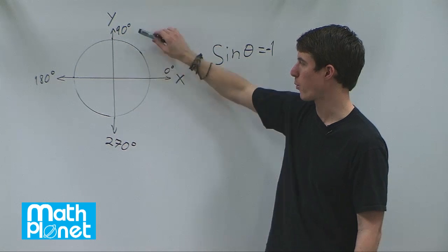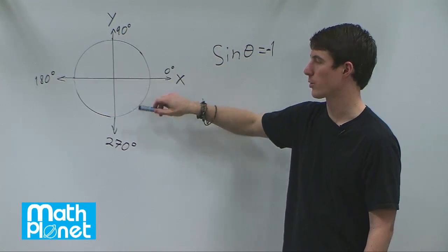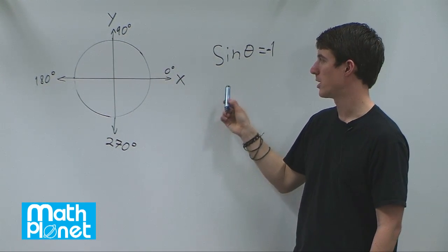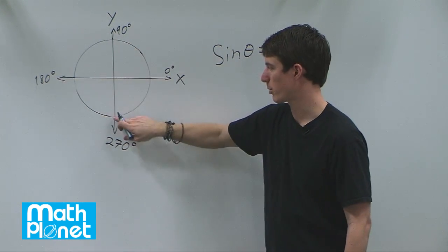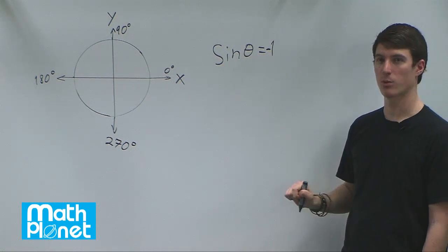In other words, what y-value, what height, corresponds to a negative one value? Well, there's only two points where the value could be a magnitude of one—this point and this point. And in this case, we're talking about negative one.